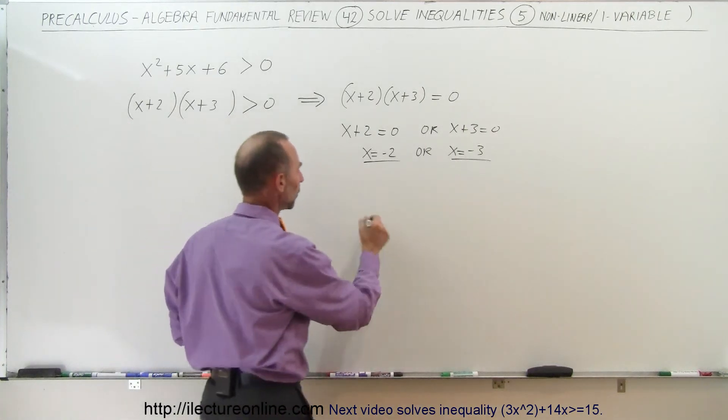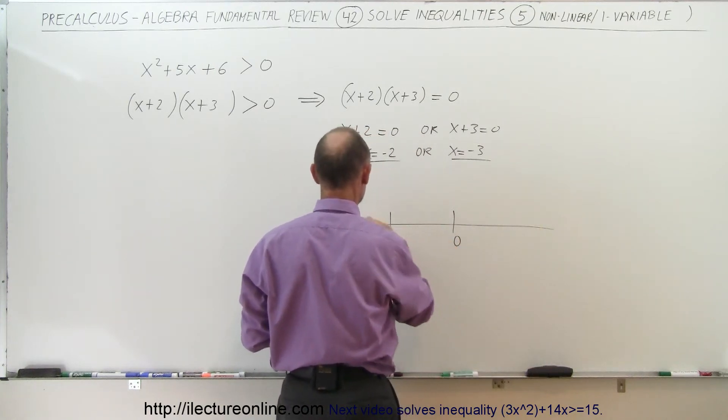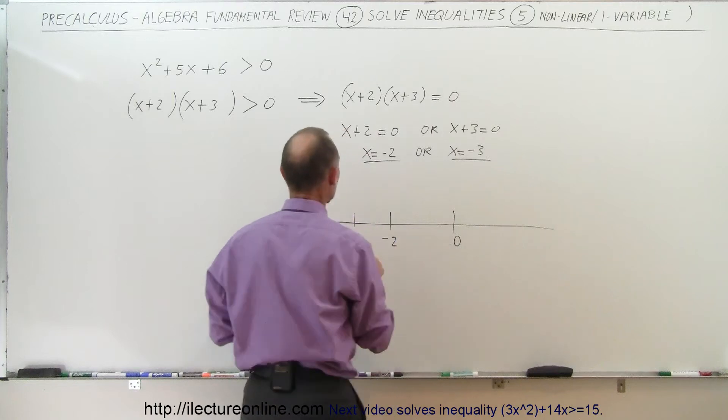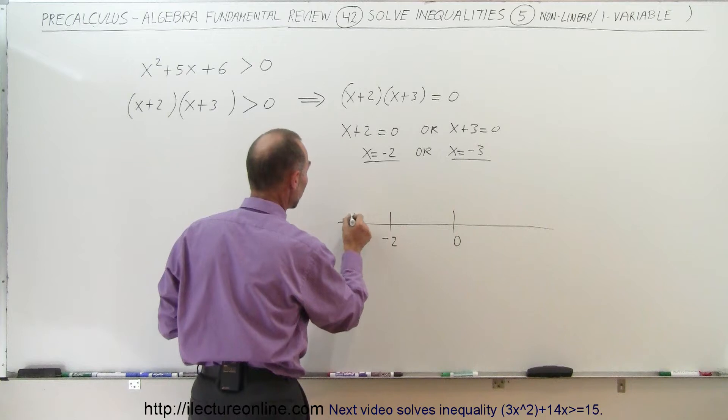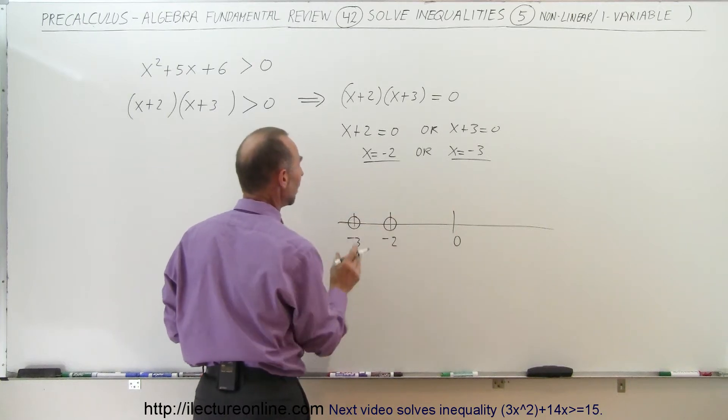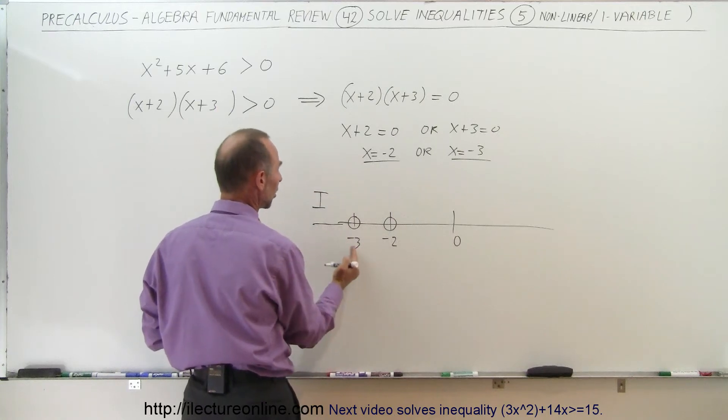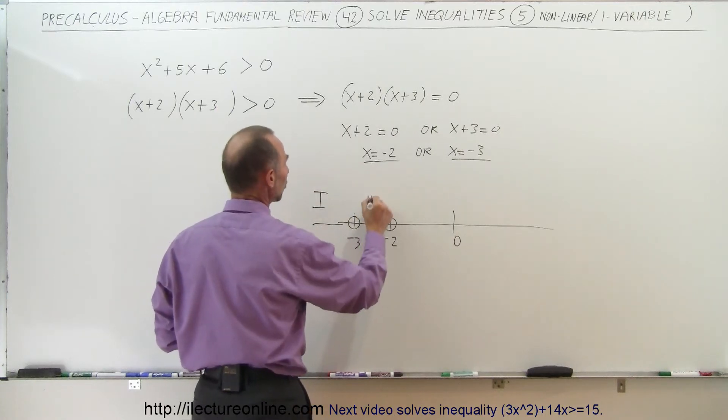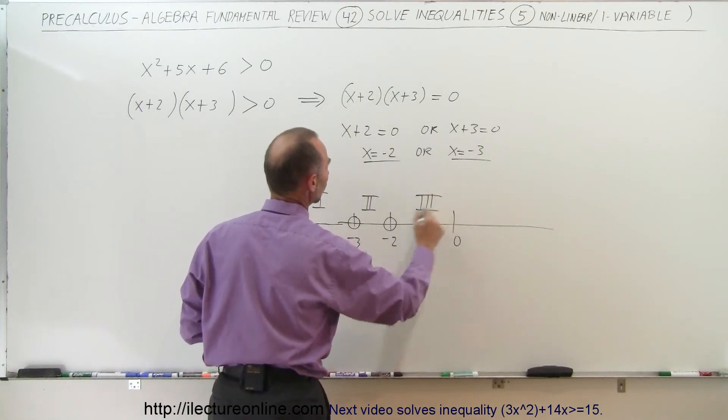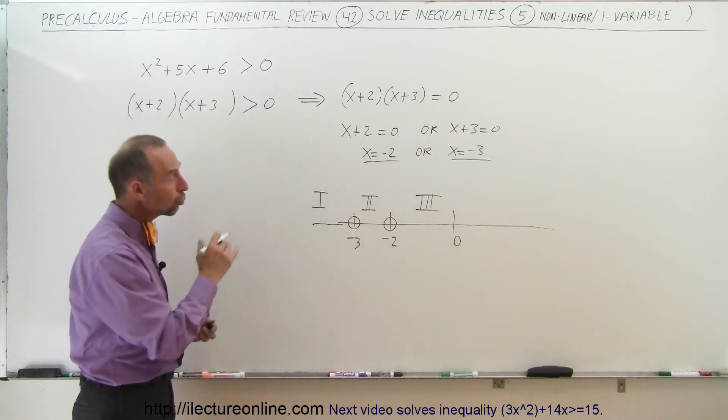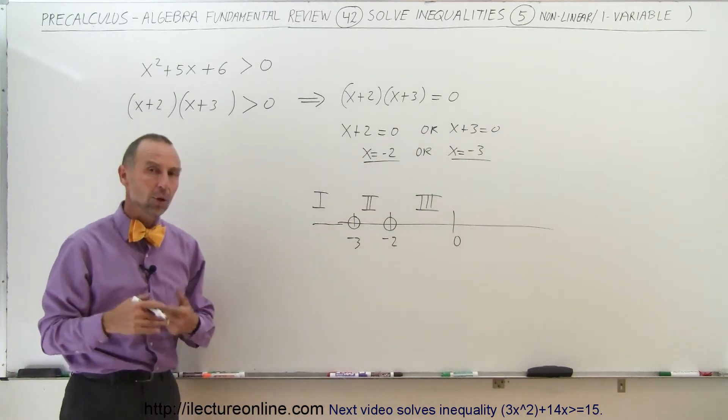If we draw that on the number line we get the following. We get the number zero here, here would be negative 2, there would be negative 3. Notice since it says greater than and the equal sign is not there, it does not include those endpoints, which means we're going to draw circles around it. And that tells us that there's three regions on the number line. The region number one which is to the left of negative 3, region number two which is between negative 3 and negative 2, and region number three which is the right of negative 2. And one or two of those regions will satisfy this inequality, we now just have to find which of those.